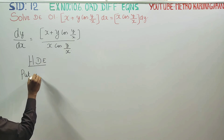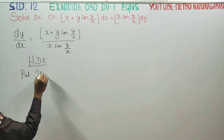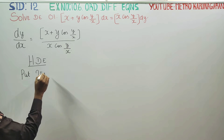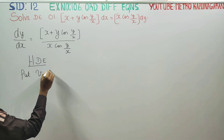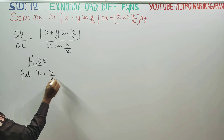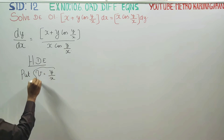Since it is a Homogeneous Equation, put v is equal to y by x. That is why we check the degree — to recognize this form and apply the substitution v = y/x.